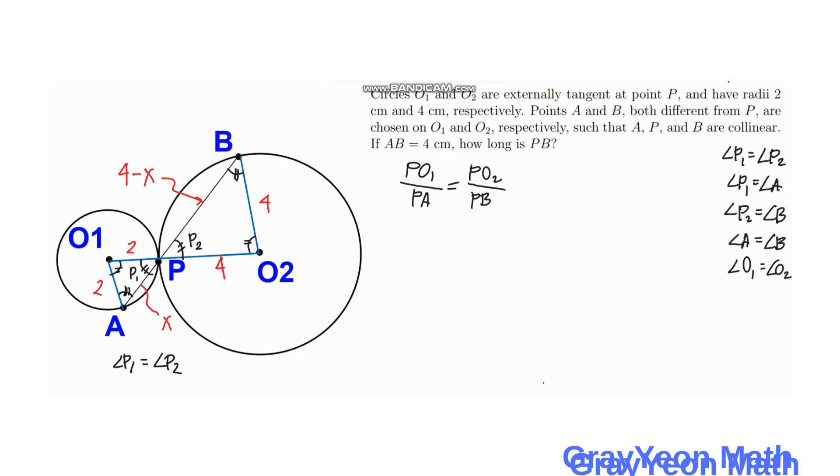We know that PO1 is equal to 2 and PA is equal to X, equal to PO2 which is equal to 4 and PB which is equal to 4 minus X. So if we cross multiply, we have 2 times 4 minus X equal to 4X.